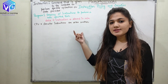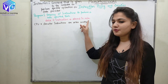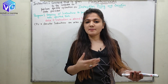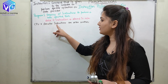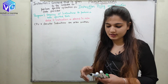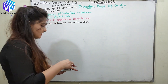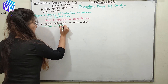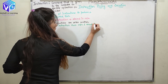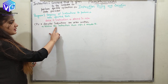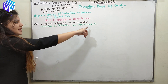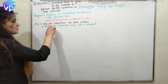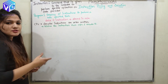Now, where are the data and instructions stored? These are stored in memory. The CPU is the main brain of the computer. The CPU is executing instructions one after another by fetching them from the memory.